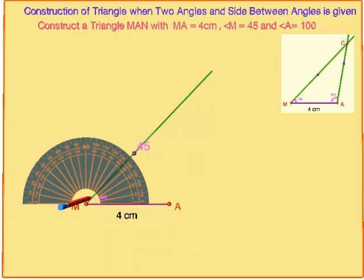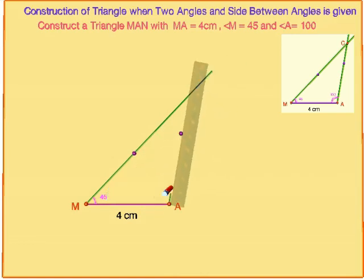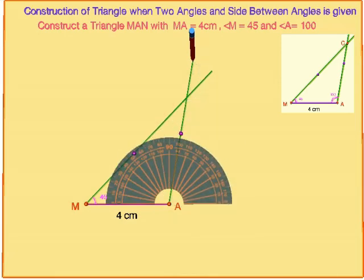Now with A as center, make an angle of 100 degrees and draw a ray at A from the initial line segment MA, which intersects the previous ray at point N.